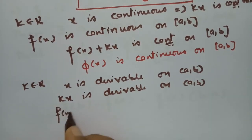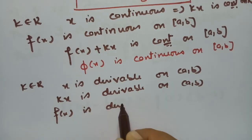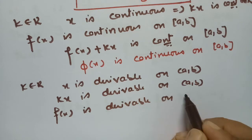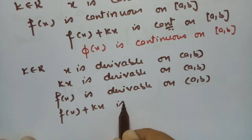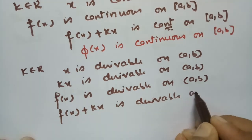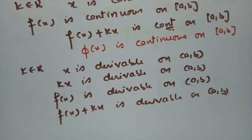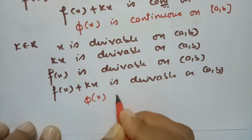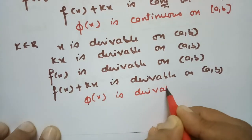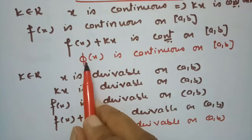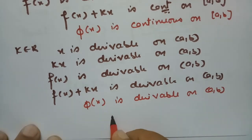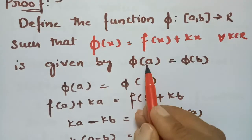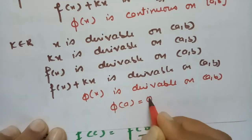From the second given condition, f(x) is derivable on open (a, b). Adding these two derivable functions, f(x) + kx is derivable on open (a, b), which is nothing but φ(x). So φ(x) is derivable on open (a, b). We also have φ(a) = φ(b) as established. These are the three conditions — continuity, derivability, and φ(a) = φ(b) — needed for Rolle's theorem.